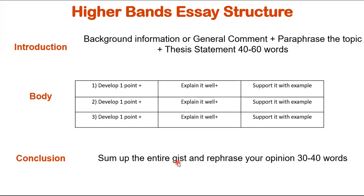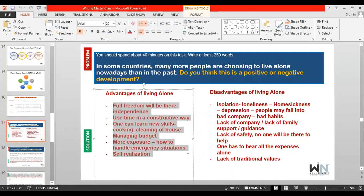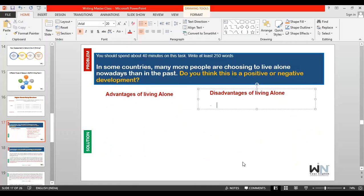The entire writing task two should not be less than 250 words — even 249 words will be penalized — and not more than 300 words or grammatical errors increase. This is a live question from the real IELTS exam: 'In some countries, many more people are choosing to live alone nowadays than in the past. Do you think this is a positive or negative development?' We can tackle this in three ways: write all positive, all negative, or balance the statement showing more positive than negative impacts.